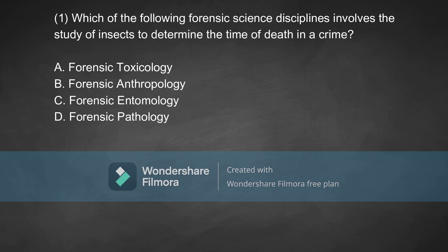Coming to the very first question: which of the following forensic disciplines involves the study of insects to determine the time of death in a crime? Option A, forensic toxicology. Option B, forensic anthropology. Option C, forensic entomology. Option D, forensic pathology. You can pause the video and think about the answer. The correct answer for this question is Option C.